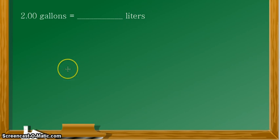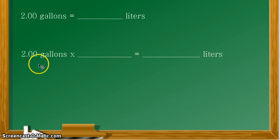So in this case, we will be converting the unit gallons into the unit liters. So we are given 2.00 gallons, and we are asked to convert that into the unit liters. So we start with writing our given there. So our given is 2.00 gallons.